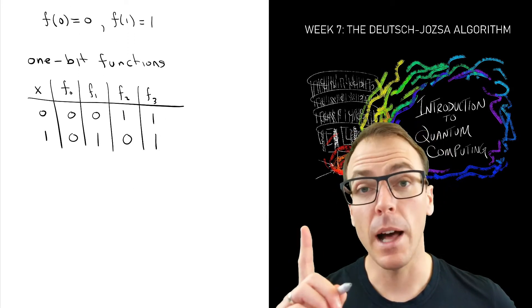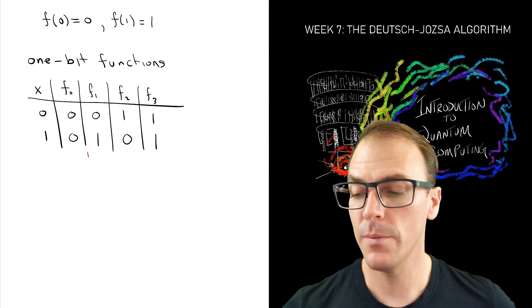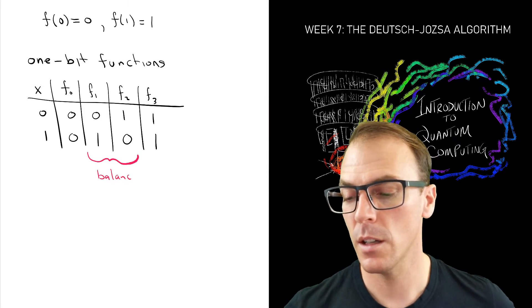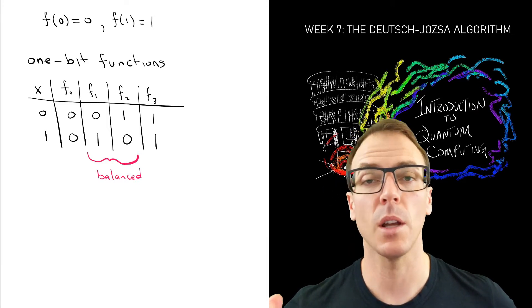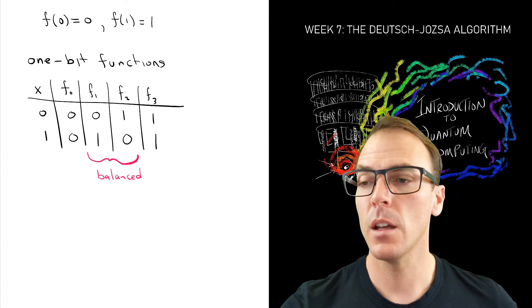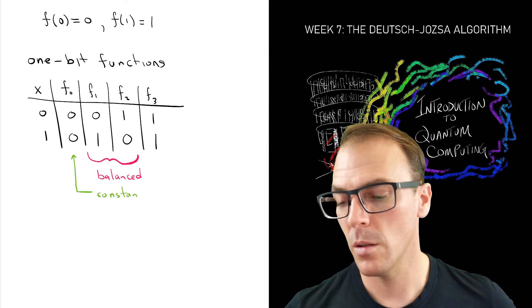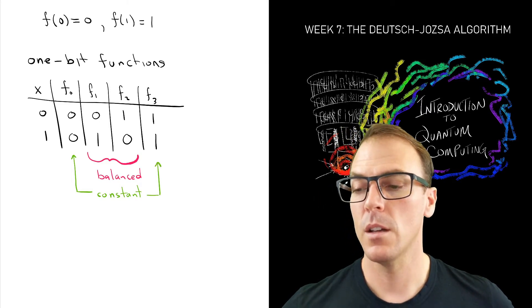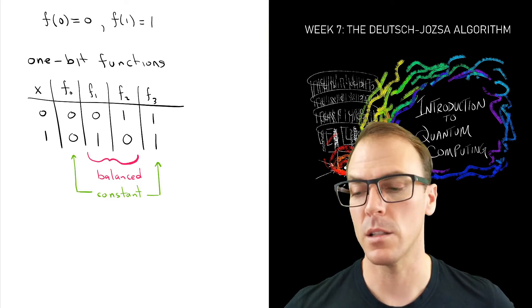Now a balanced function was where we started. And that's what these two functions are. And it's called balanced because there's the equal number of zeros and ones in the output of the function. These two here are called constant because the output stays constant no matter what the input is. So f0 and f3 are constant functions, f1 and f2 are balanced functions.